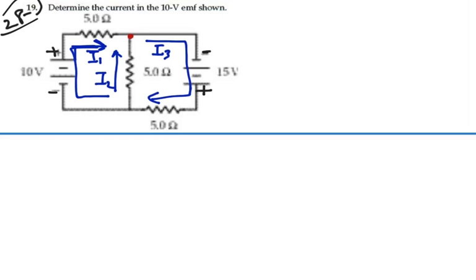So we have this junction up here where the three currents are concerned. And I1 and I2 are flowing into that junction, I3 is flowing out. So my first equation would be I1 plus I2 equals I3.